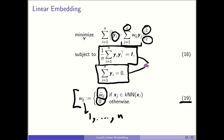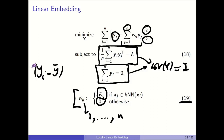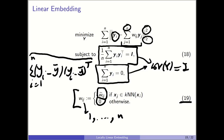The two constraints together say: the mean of embedding should be zero and the covariance should be identity. The covariance definition is the sum of (y_i minus y-bar)(y_i minus y-bar)^T. Setting mean to zero reduces it to what we have. This means the variance of the embedding should be equal in different directions.